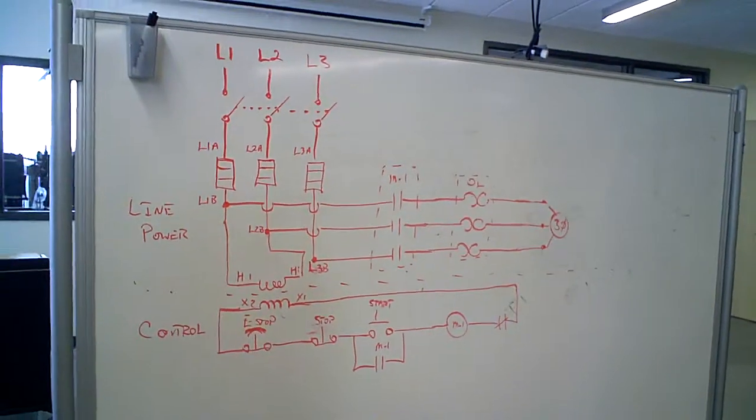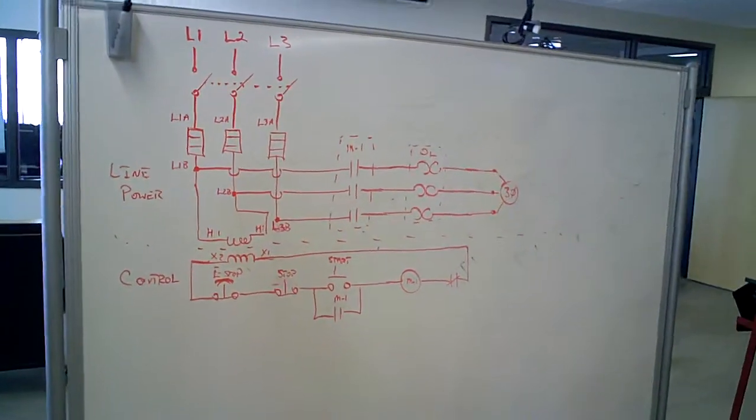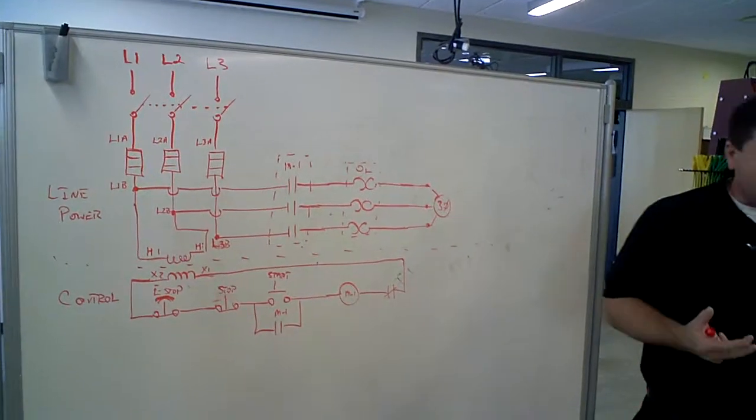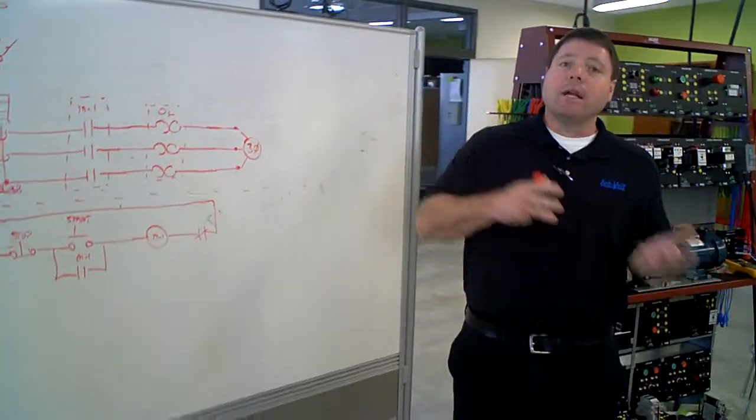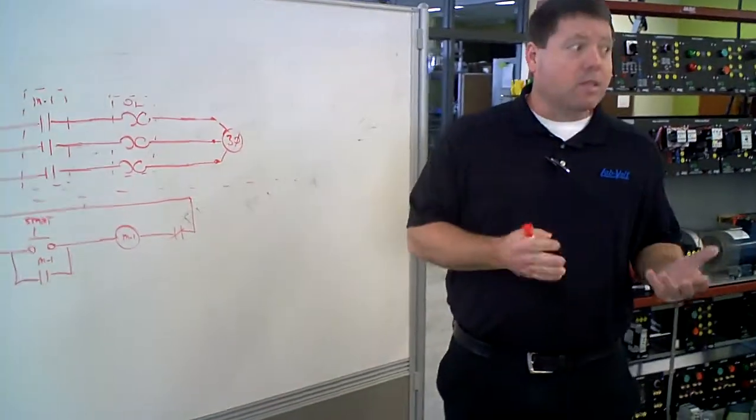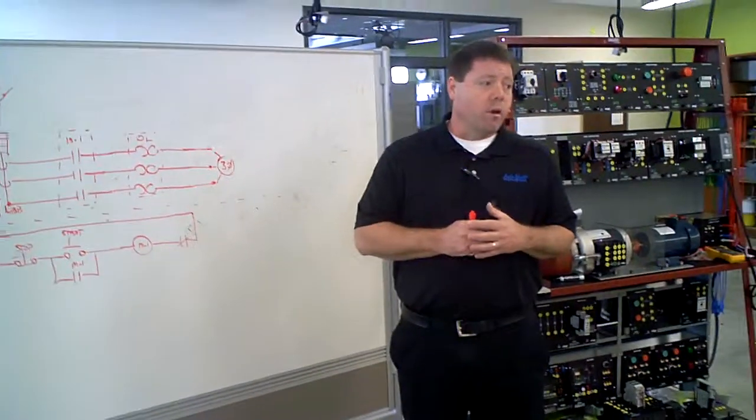In the case of this trainer, we've got a 208-120 supply. It's a three-phase, five-wire, 208-120. You really don't need the transformer in there to run the control circuit on 120. But it adds that flexibility there to teach them the process of using a transformer, even though you don't need one.